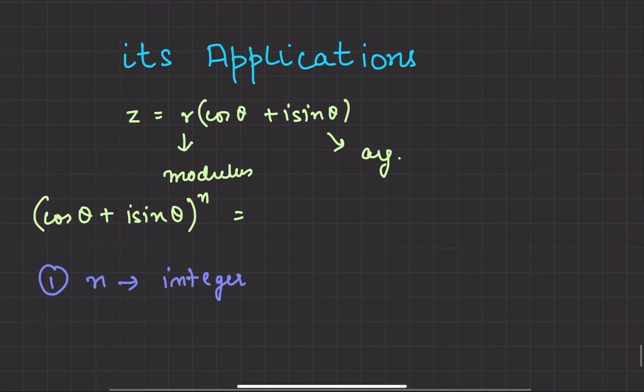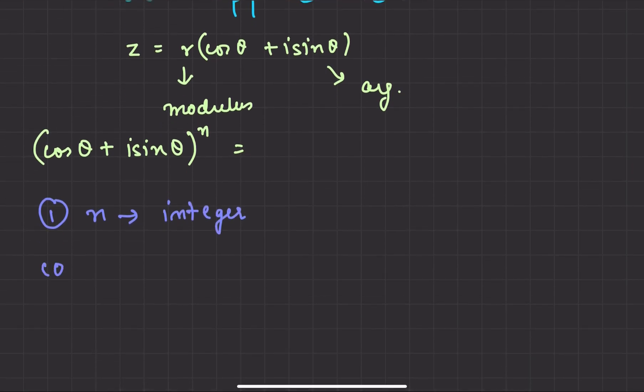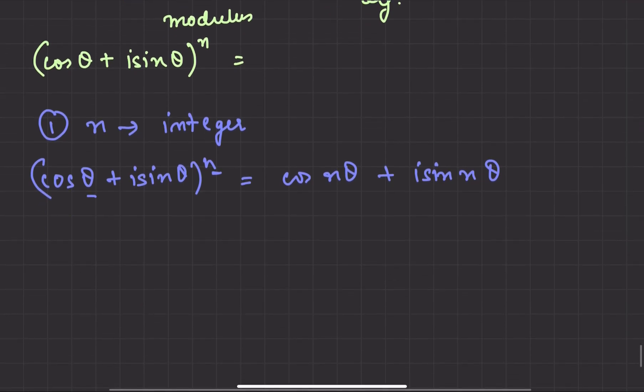It could be any integer. Then what happens is cos theta plus iota sin theta to the power n. When n is an integer, we have only one root. It could be cos n theta plus iota sin n theta. This is the value which we will have. So simple concept: we multiply it with the argument.